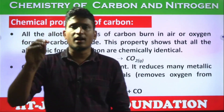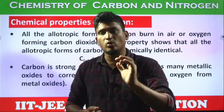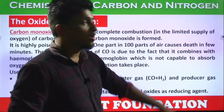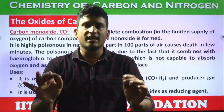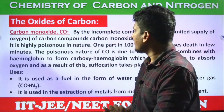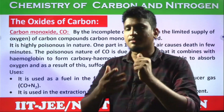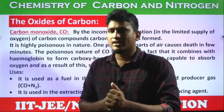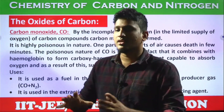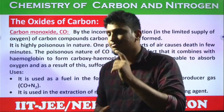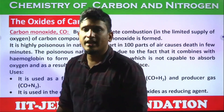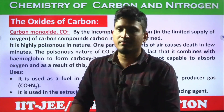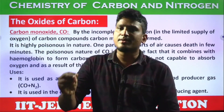This property of oxidizing itself while making the other compound undergo reduction is called the reducing property of carbon. The purest form of carbon obtained by distillation of coal is called coke, which is mainly used as a reducing agent in metallurgical processes for the extraction of metals. The oxides of carbon are carbon monoxide, formula CO, and carbon dioxide. Carbon monoxide is a very dangerous gas.